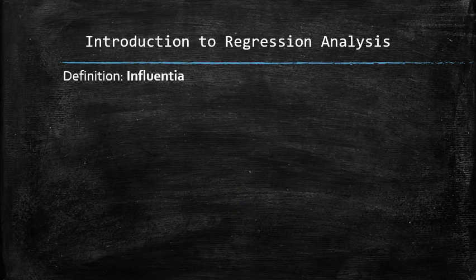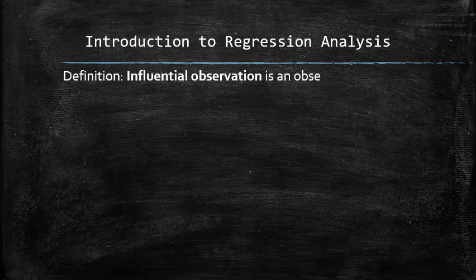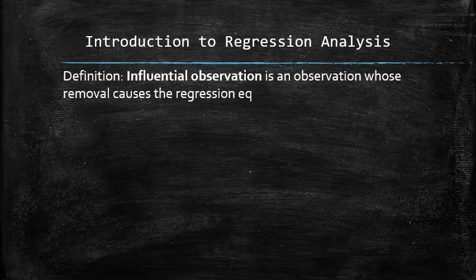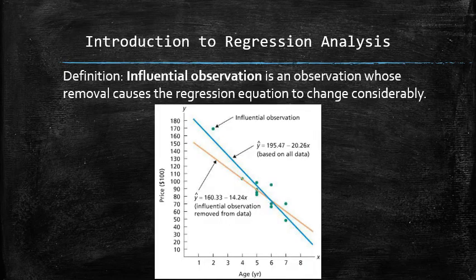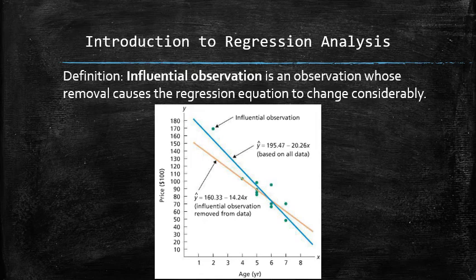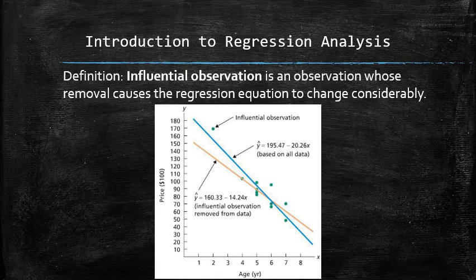Influential observation is an observation whose removal causes the regression equation to change considerably. In our example, the point 2.169 is influential observation because if it is removed, the equation of the regression line changes significantly.